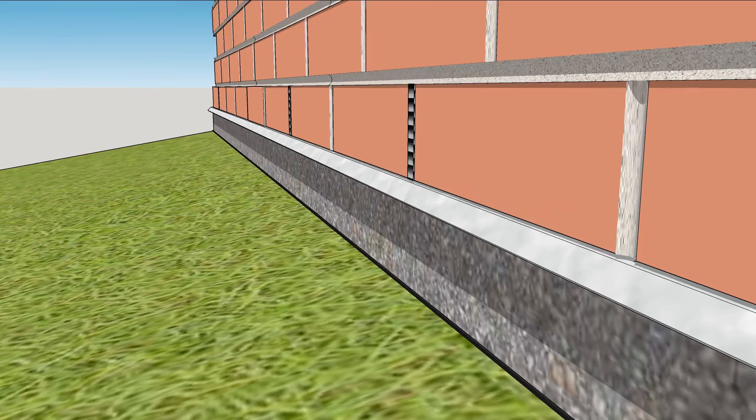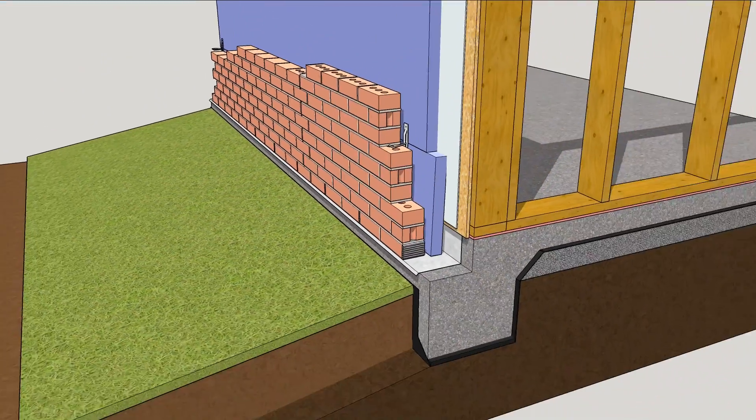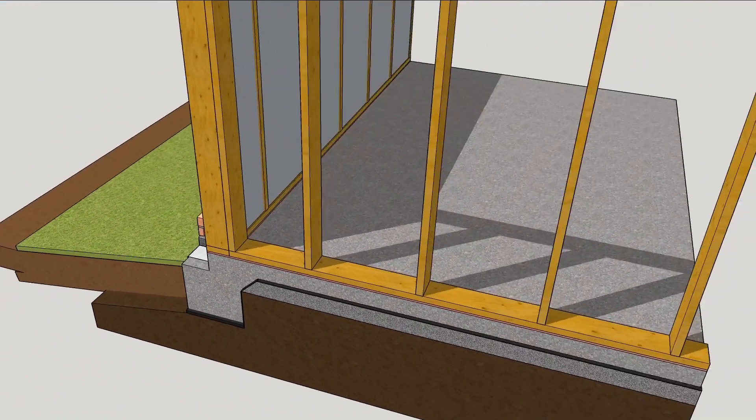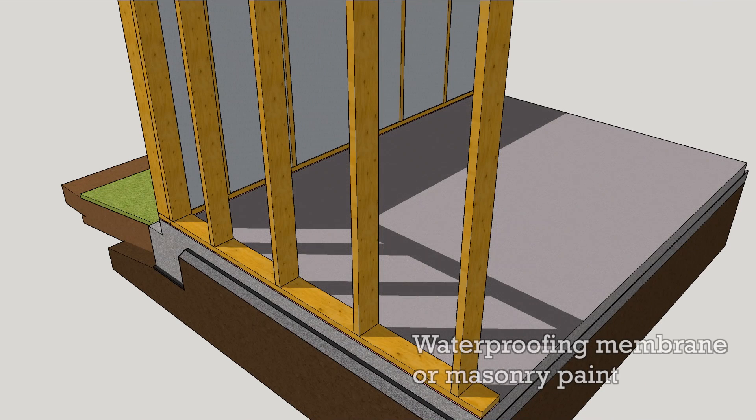Weep holes and flashing with a kicked out edge give water a place to go. This should be all you need for a dry slab, but before putting down the floor, it makes sense to use a waterproofing membrane or a masonry paint.